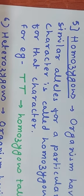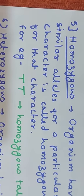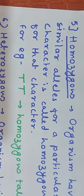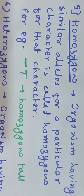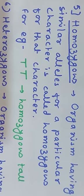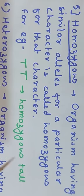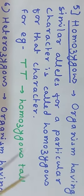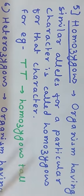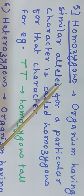The next definitions are homozygous and heterozygous. Homozygous: an organism having similar alleles for a particular character is called homozygous for that character. Alleles are two or more genes controlling one character of the body, and in the homozygous condition those alleles are similar.